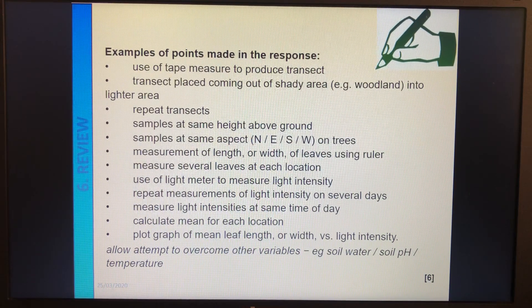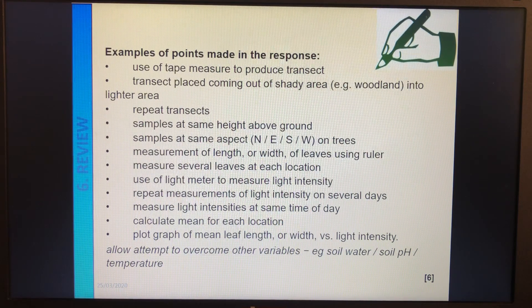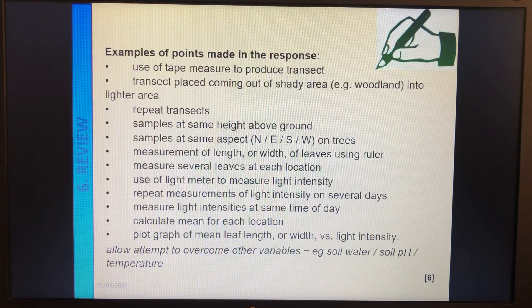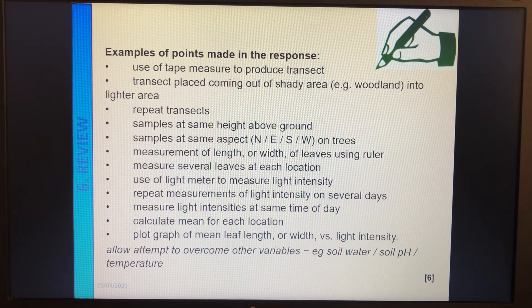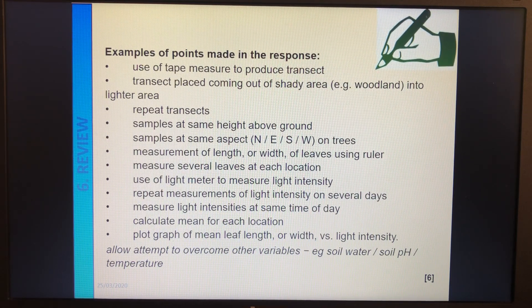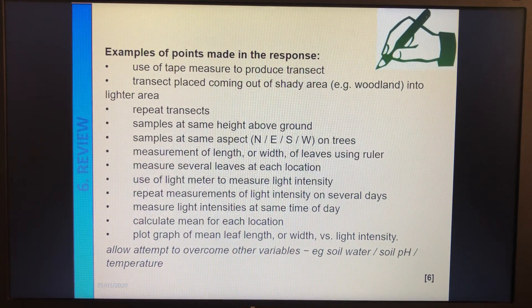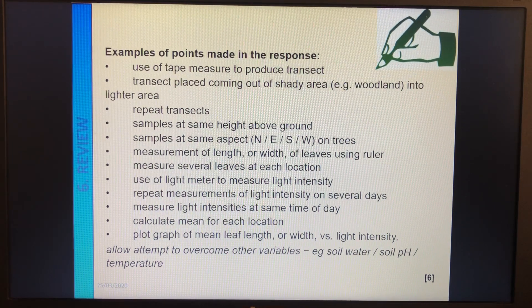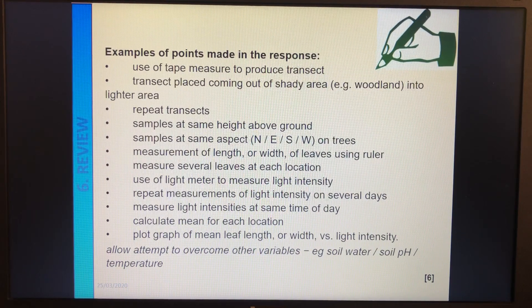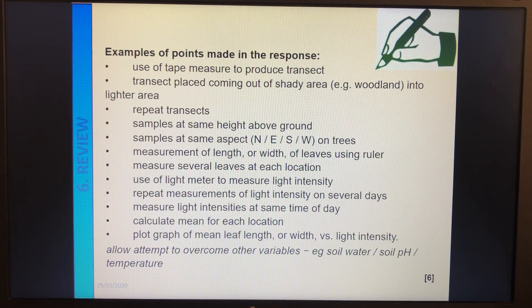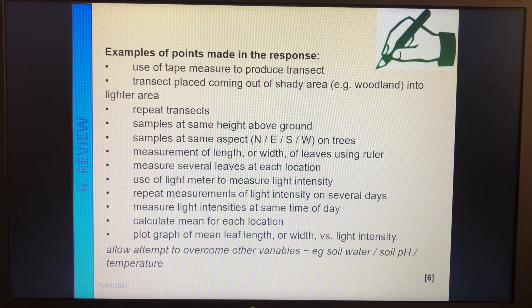Calculate a mean for each location, just like we did on the quadrat sampling. We did lots of repeats and then calculate a mean. And we don't take anomalies out of this because we assume that we've measured correctly and the leaves are there. So we don't tend to take anomalies out. We just kind of go with it. And then plot a graph of mean leaf length or area or width, whatever you've got, versus light intensity.